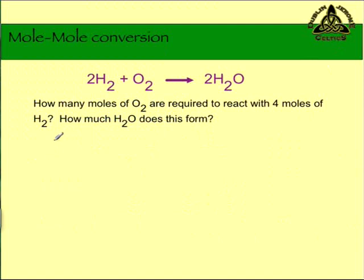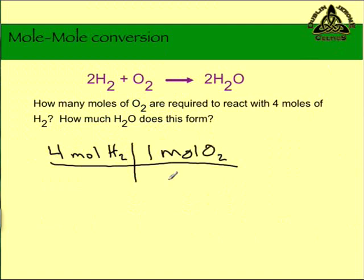Here's another practice problem. How many moles of O2 are required to react with 4 moles of H2, and how much H2O does this form? Let's focus on moles of O2 first. We're gonna use our 4 moles of H2, set up a little T chart. We're trying to find moles of O2, so we're gonna use the moles of O2 from the balanced equation, which is 1, and we're gonna use the moles of H2 from the balanced equation, which is 2. H2 cancels out. So we've got 4 times 1 divided by 2, we need 2 moles of O2 for this reaction to occur.